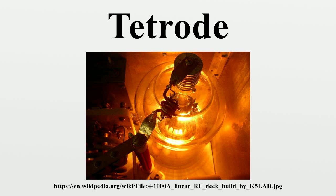Another important application of the space charge tetrode was as an electrometer tube for detecting and measuring extremely small currents. For example, the General Electric FP54 was described as a space charge grid tube designed to have a very high input impedance and a very low grid current. It is designed particularly for amplification of direct currents smaller than about 10⁻⁹ amperes, and has been found capable of measuring currents as small as 5×10⁻¹⁸ amperes. It has a current amplification factor of 250,000, and operates with an anode voltage of 12V and space charge grid voltage of plus 4V.